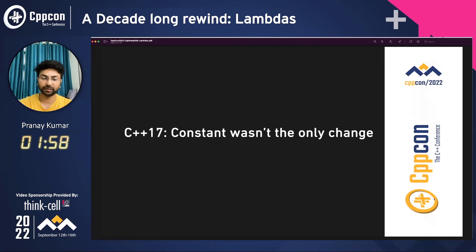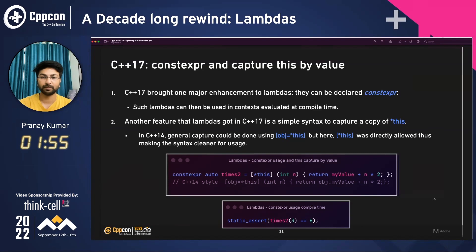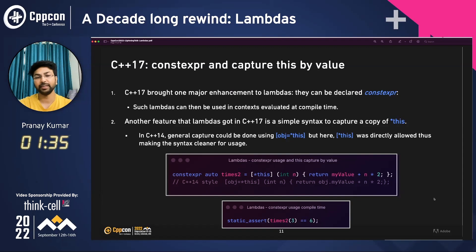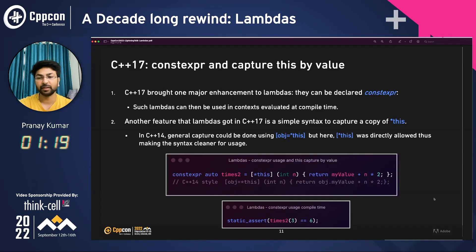In C++17, there were two major changes. One was the introduction of constexpr for lambdas, which was a major enhancement. The power it gave is that lambdas could be used and evaluated at compile time. The other feature was that you could use a simple syntax to capture a copy of this by value. In C++14, this was also possible, but you had to use an alias like obj. But in C++17, this could be directly captured using star-this, making the syntax much cleaner. The lambda here that is getting my value is using this by value, captured natively in C++17.